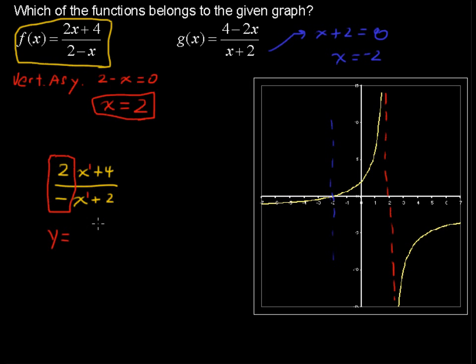I'd have a horizontal asymptote of negative 2. That is 2 over negative 1, and it does look like it's going to tend that way.